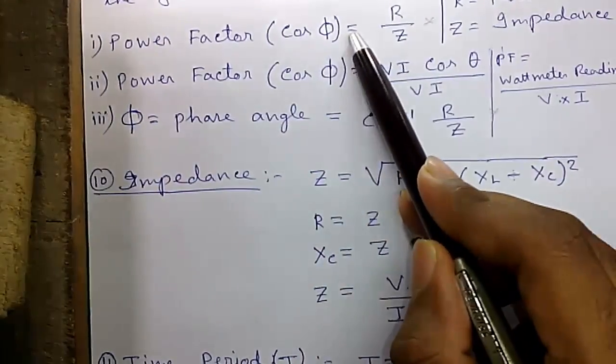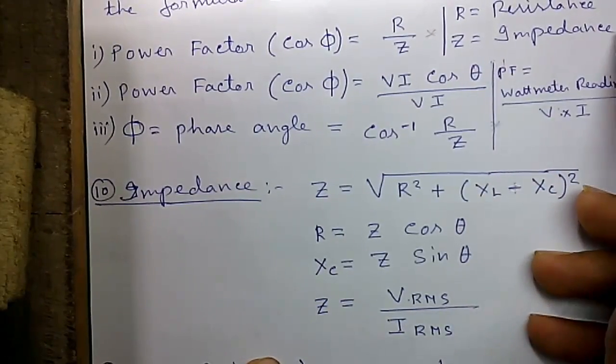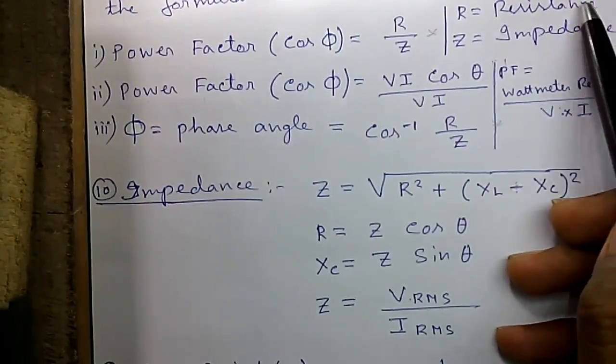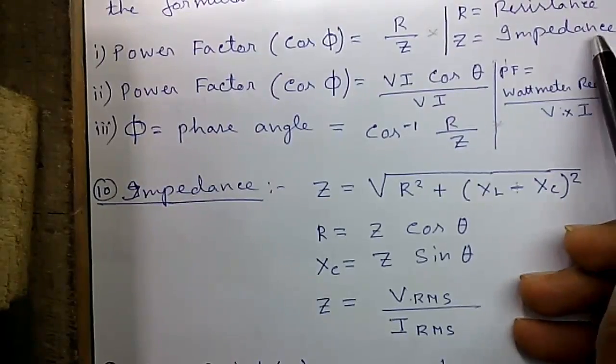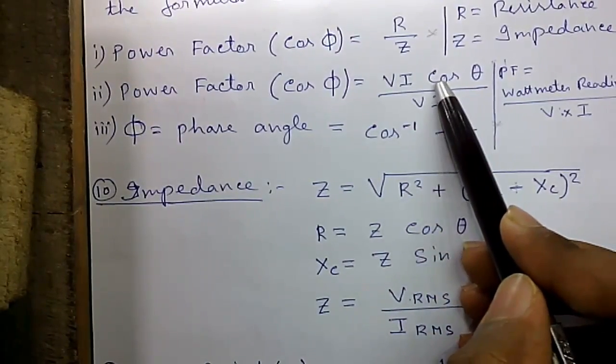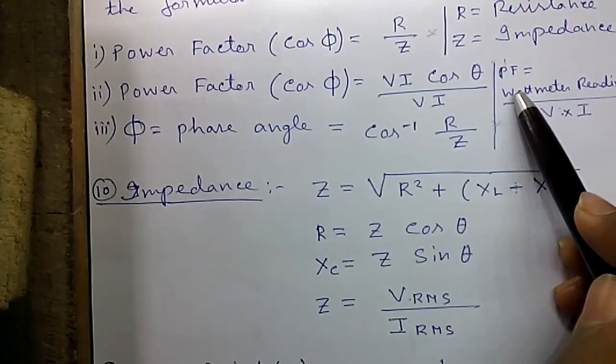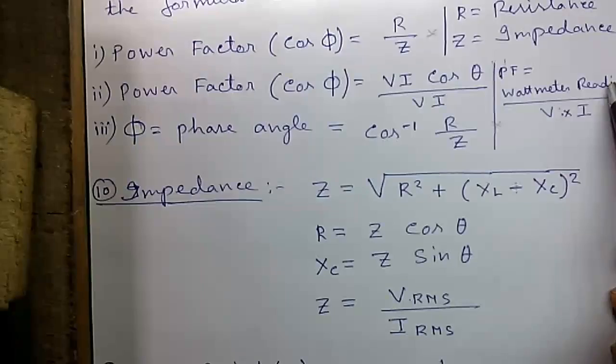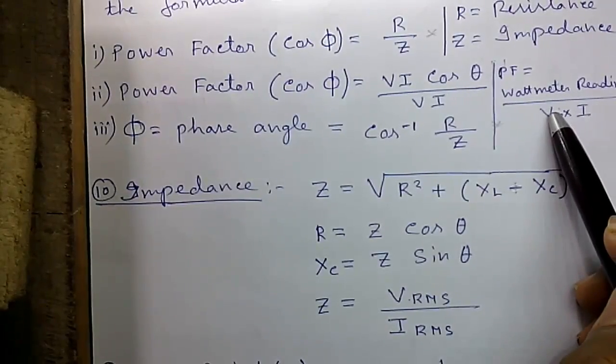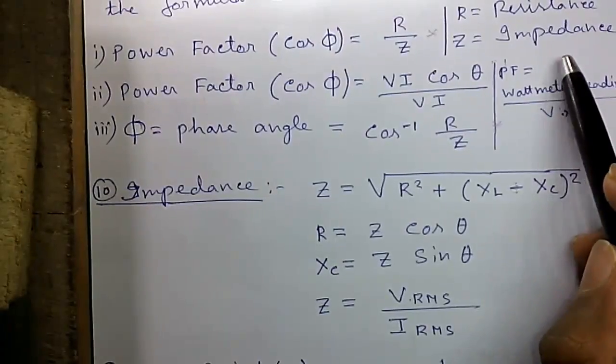Formula number 1, power factor cos phi is given by R by Z where R is the resistance in the circuit and Z is the impedance. Impedance is caused due to the inductance and capacitance in the circuit. In DC circuit we use the term resistance and in AC circuit we use the term impedance. Formula number 2 for power factor, cos phi equals V I cos theta by V I where V is the voltage and I is the current. Third formula for power factor, PF equals wattmeter reading divided by V into I. If you connect a wattmeter into AC circuit and divide its reading by volt into ampere which we individually measure by voltmeter and ammeter, the value will be the power factor of the circuit.